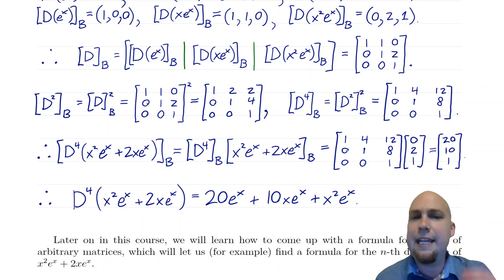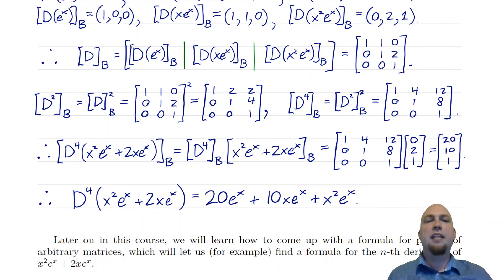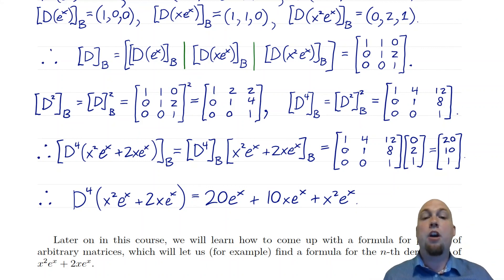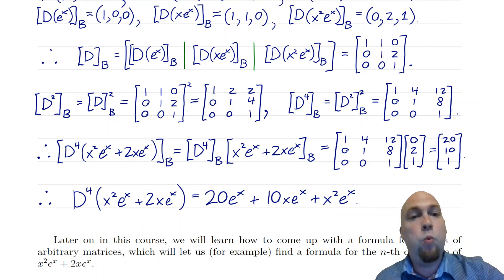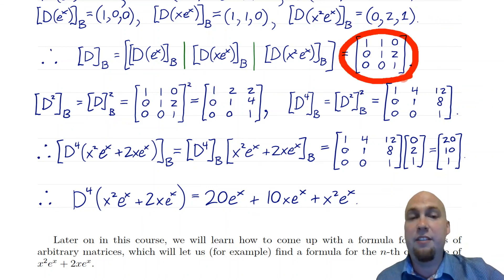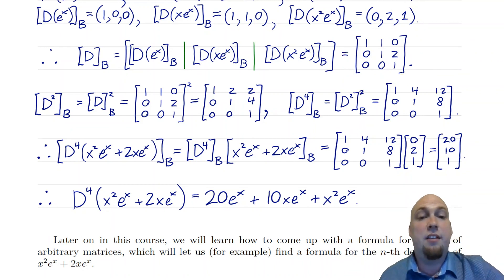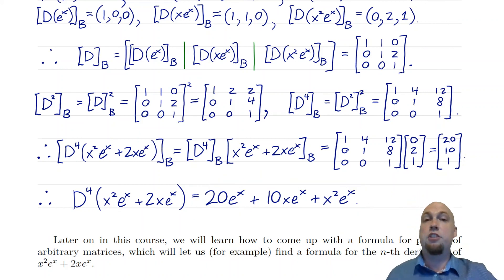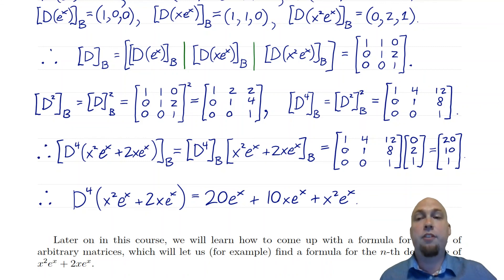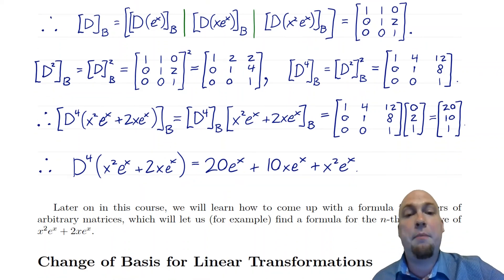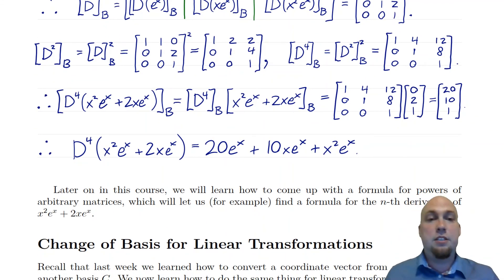We just went backwards from how we usually do things — usually we go from vector to coordinate vector, but here we're going from coordinate vector back to the vector itself. Once we get later in the course, we'll find formulas for arbitrary powers of arbitrary matrices, allowing us to take whatever power we like of this derivative matrix and get a formula for whatever derivative of a function we like — a very standardized framework.